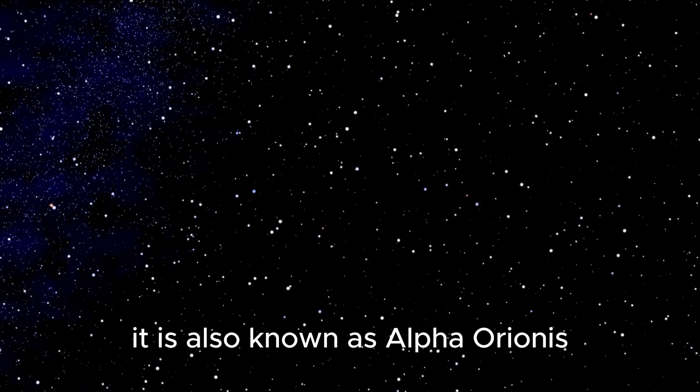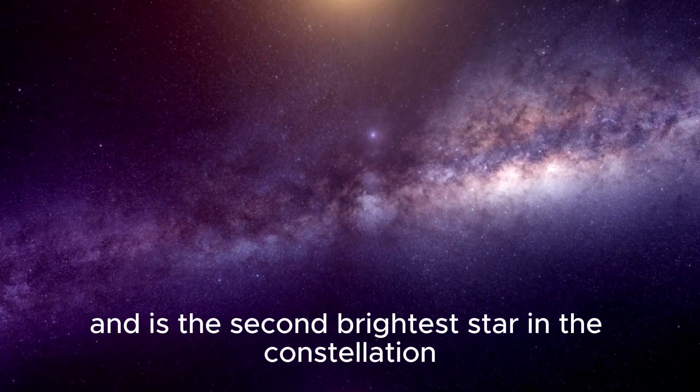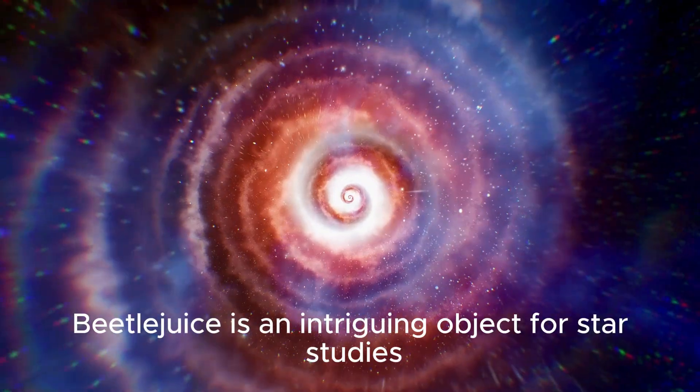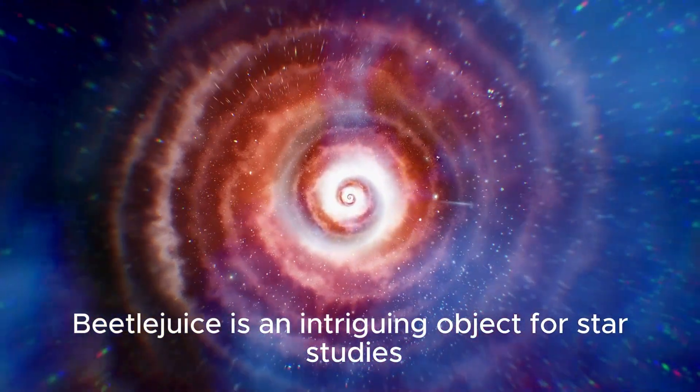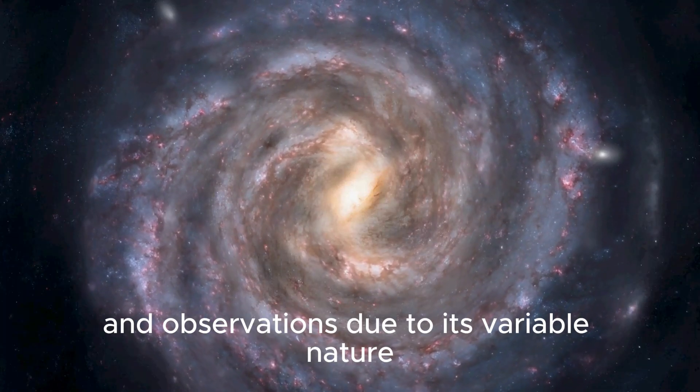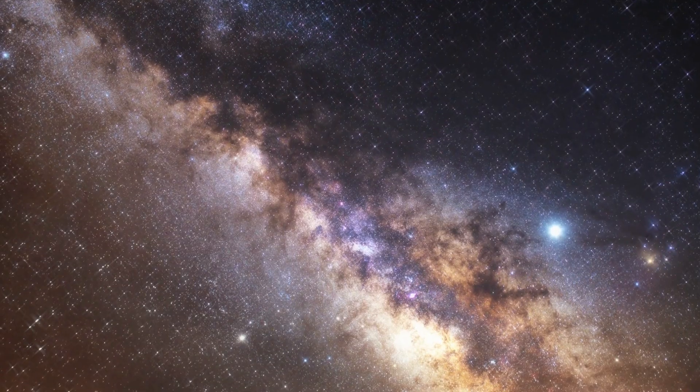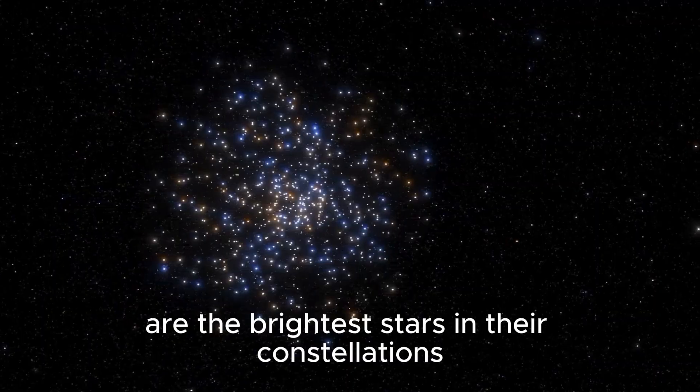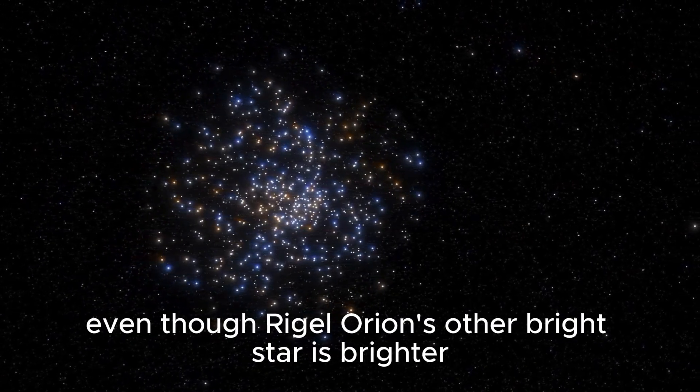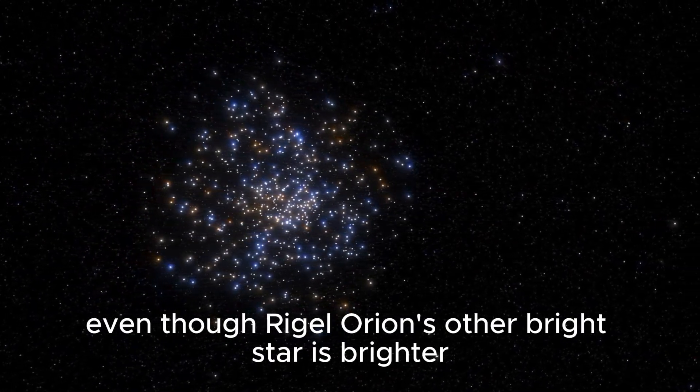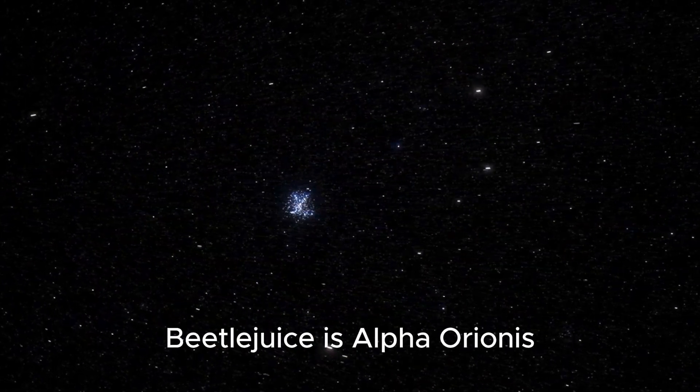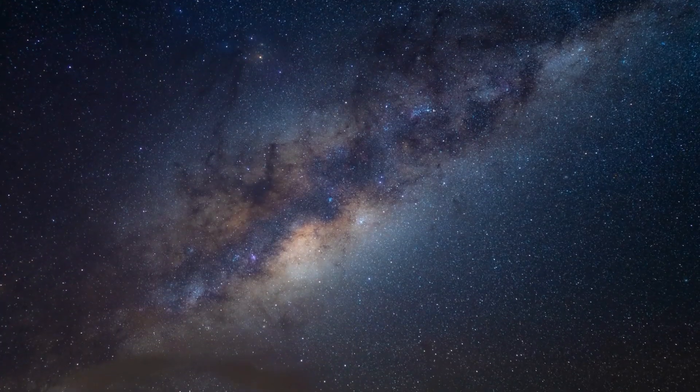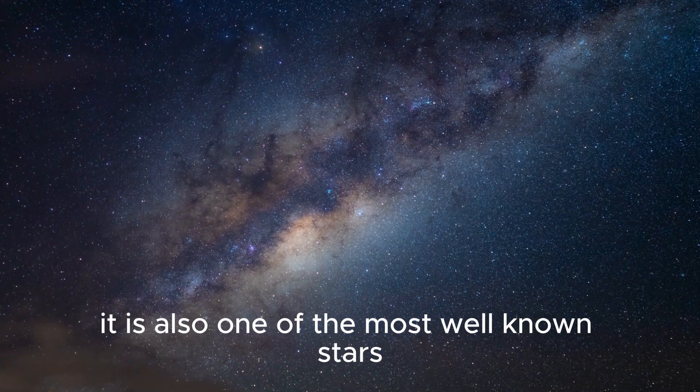It is also known as Alpha Orionis and is the second brightest star in the constellation after the blue supergiant Rigel. Betelgeuse is an intriguing object for star studies and observations due to its variable nature as well as its odd name. Frequently, stars with the name Alpha are the brightest stars in their constellations. Even though Rigel is brighter, Betelgeuse is Alpha Orionis due to its name, brightness, size, and reddish hue.